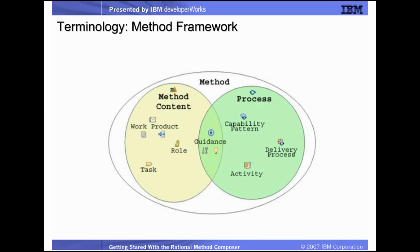This diagram provides a graphical depiction of the method framework. There is method content — that is, work products, roles, tasks, and content categories. There are processes, capability patterns, and delivery processes and activities. There is guidance that can describe and thus be associated with both method content and process content. The next several slides will each look at these terms in more detail and describe how they relate to the original RUP Process Workbench and RUP Builder terms.